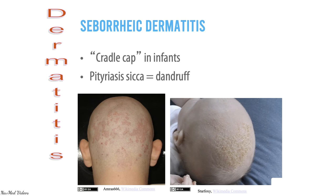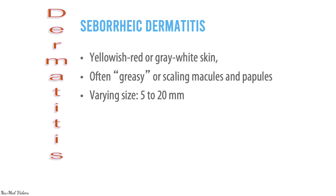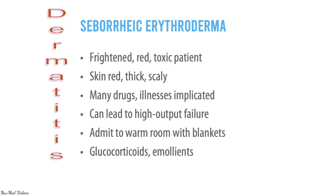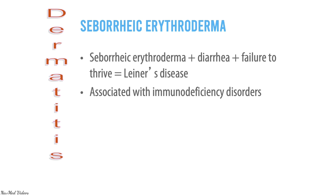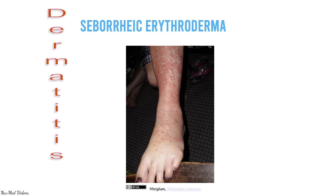Seborrheic dermatitis is very common — also called cradle cap in infants, pityriasis sicca, or dandruff. It presents as yellowish-red or gray-white, often greasy, scaling macules and papules of varying sizes (5–20 mm). In severe cases the skin is red, thick, and scaly, and various drugs or illnesses can trigger this. It can lead to high-output failure; treatment is admission to a warm room with blankets and glucocorticoids. Seborrheic erythroderma plus diarrhea or failure to thrive is called Leiner's disease, associated with immunodeficiency disorders.